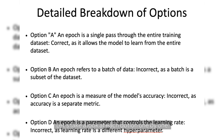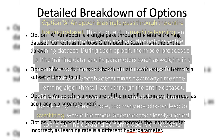Let's take a look at each option one by one. Option A: an epoch is a single pass through the entire training dataset — this is correct. In machine learning, an epoch refers to one complete pass through the entire training dataset. During each epoch, the model processes all the training data and its parameters, such as weights in a neural network, are updated to minimize the loss function.